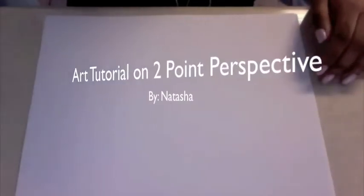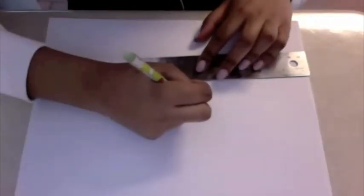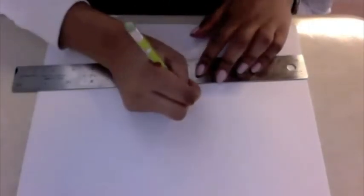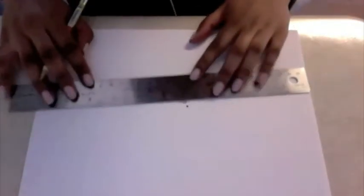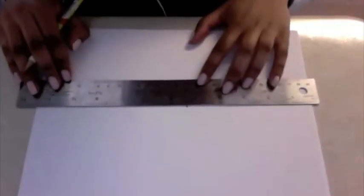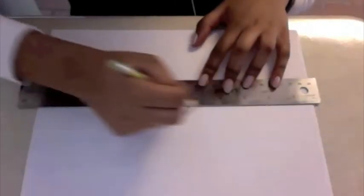Today I'm going to be showing you guys how to make a building in two-point perspective. First, you need to make a point of view, which is in the middle of the page. Then you're going to take that dot and make a horizon line — basically just draw a straight line through it.